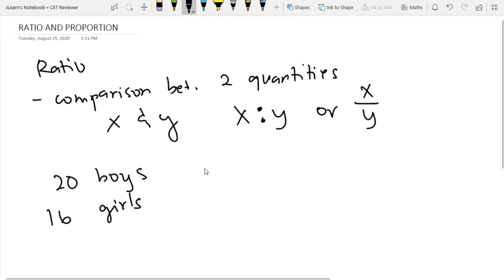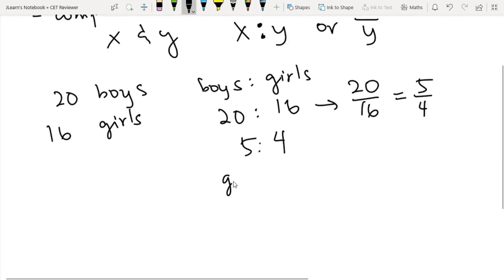Boys to girls is 20 is to 16. Or, you can actually simplify this just like a fraction. 20 over 16 when simplified becomes 5 over 4. So 20:16 equals 5:4. If we want the ratio of girls to boys, just reverse it, so that is 4 is to 5.